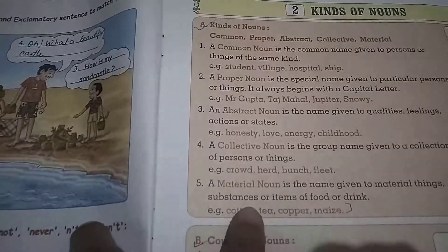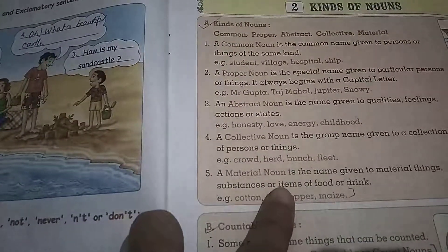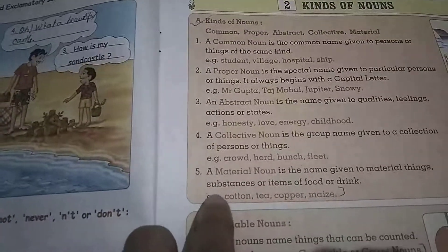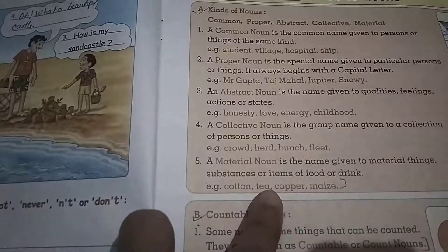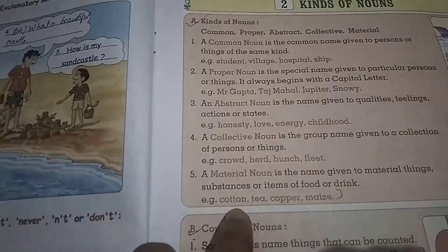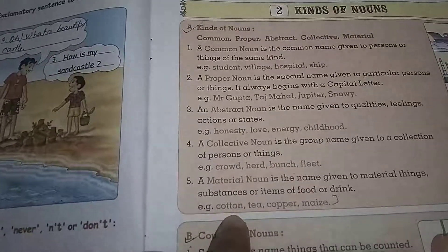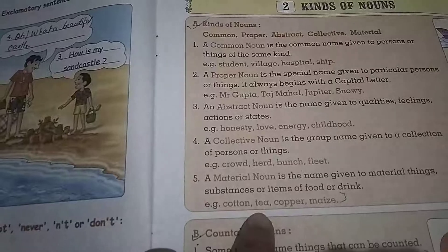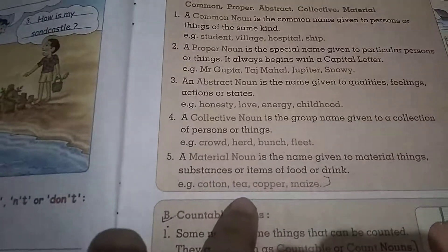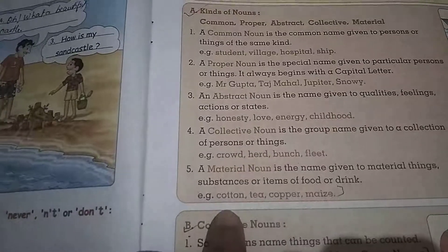Now the fifth part is the Material Noun. A Material Noun is the name given to material things, substance, or items of food or drink. The name for substance — for example, 'cotton', this is a material. 'Copper', 'maize' — these are all materials. So we call these Material Nouns. Now items of food or drink also fall under this category.